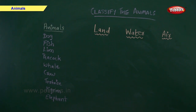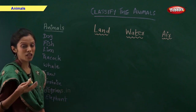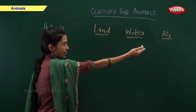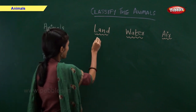Classify the animals. On one side I have written the names of animals and you have to classify them as land animals, water animals or air animals. Dog — dog is a land animal.